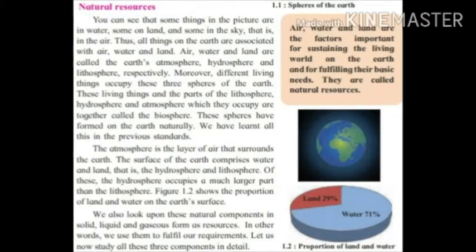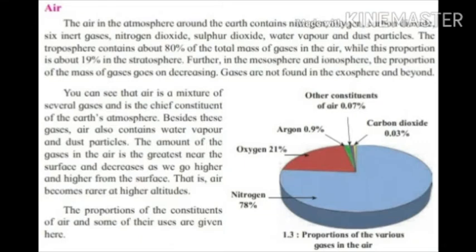Let us study all three components in detail. Air in the atmosphere contains nitrogen, oxygen, six inert gases, nitrogen dioxide, sulfur dioxide, water vapor and dust particles. The troposphere contains about 80 percent of the total mass of gases. The stratosphere accounts for nearly 19 percent, and further there are the mesosphere and ionosphere, with the proportion of gases decreasing beyond that.